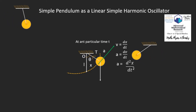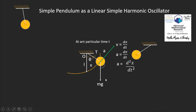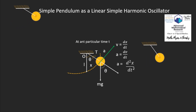Now we draw the free body diagram to identify which forces act on the pendulum. The first force is tension T acting along the string. The second force is weight, mg, acting downward — gravity always acts downward. We then consider that the pendulum has rotated by angle θ and draw a line through the string wire.